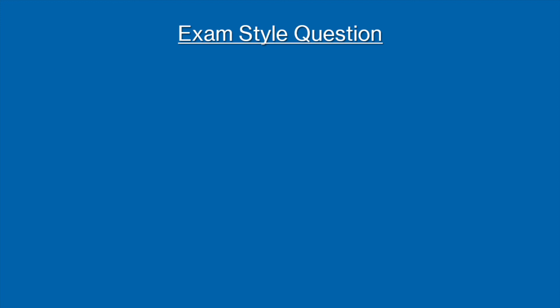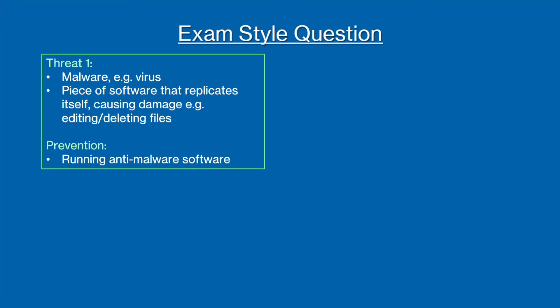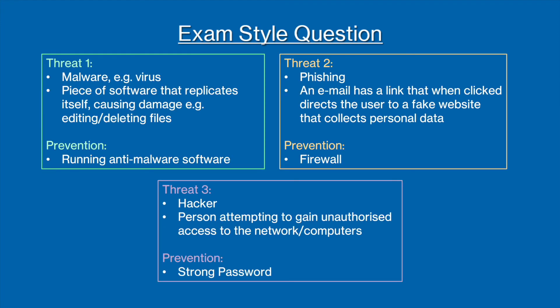Here is an example of what you could write. One threat to the computer system could be malware, for example a virus. This is a piece of software that replicates itself and causes damage to the system. As the name suggests, a good prevention method would be to run anti-malware software.